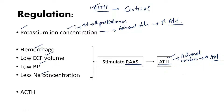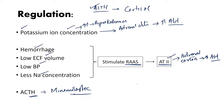Last but not least is ACTH, which plays a minimalistic role in the secretion and regulation of aldosterone. So these are the factors which are important in the regulation of aldosterone.